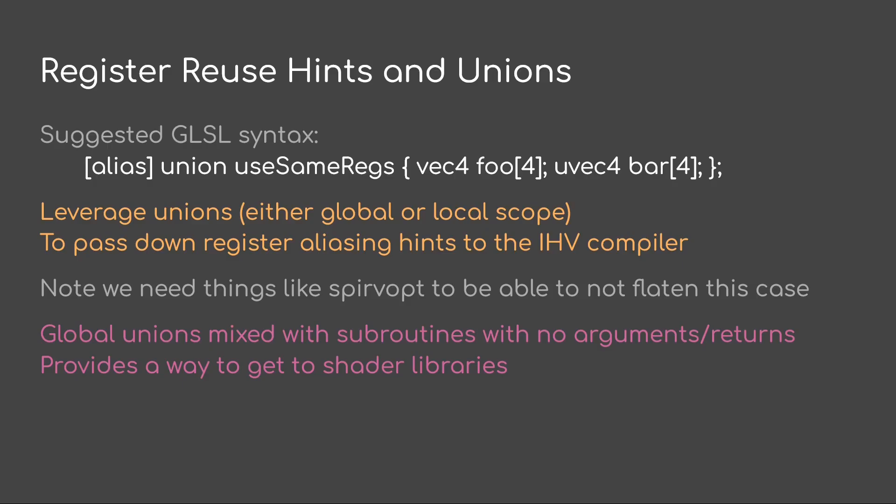The problem is that when you go into single assignment form in the IR, you basically explode registers. Then somehow the compiler has to drop single assignment form back into a small set of registers, and typically it does a horrible job. The suggested syntax would be [[alias]] and then just use a union construct — GLSL would have to add the union. Whatever's in the union, you'd want those things to alias the same registers. So you're not doing explicit register allocation, but you are providing a hint that may be the one thing you need to get the compiler to do the rest itself.